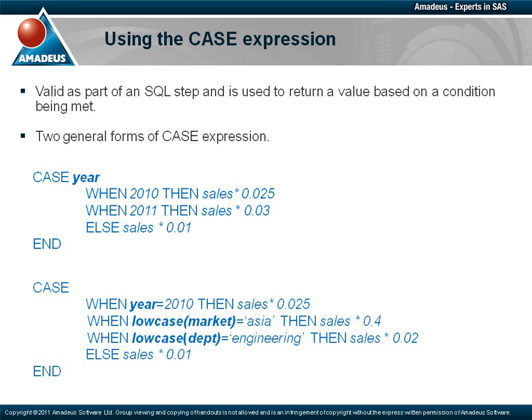With the second example, the case operand is omitted and each when condition is a complete expression that tests the value of a different column, which offers a greater degree of flexibility and can prove very useful.